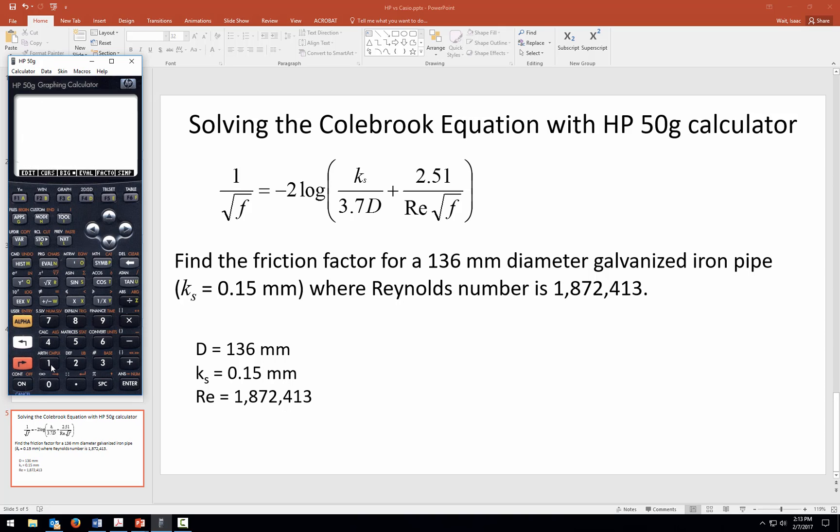So 1 divided by the square root of f—and I'm pushing the alpha button, which is yellow, to get the f that's over here on this key—is equal to, orange equal to, and it's minus 2, so I need to put the minus sign on there with the plus-minus. That toggles the value, and I want it to be minus.